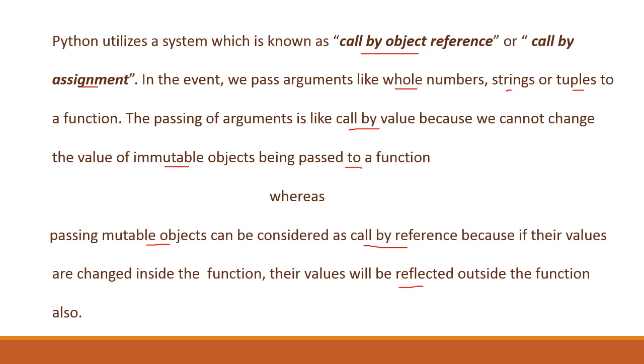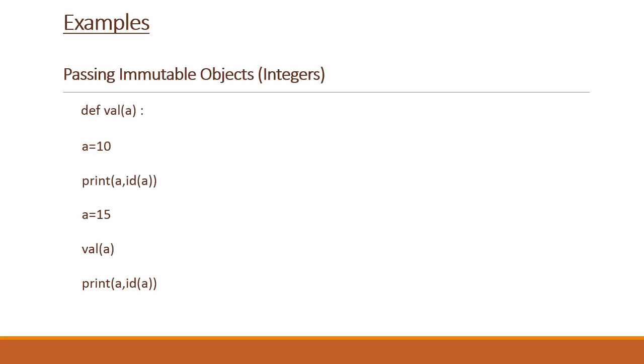Let us see a few examples to understand this concept better. Passing immutable objects like integers. You have taken a function where you have passed a variable. A value we have assigned 10, and when we print this value, we are printing a and the id of a.